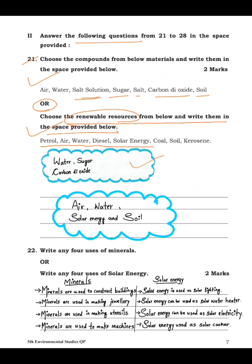For the first question, let's solve it: air is not a compound — it is a mixture. Water — yes, it is a compound. Salt solution — no. Sugar — yes, it is a compound. Salt — no. Carbon dioxide — yes, it is a compound. So the three compounds are water, sugar, and carbon dioxide.